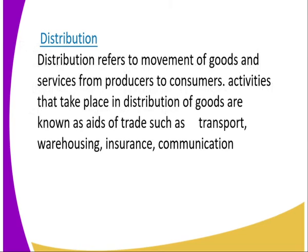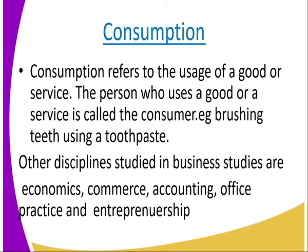Then we go to distribution. Distribution refers to the movement of goods and services from the producer to the consumer. This includes activities like storing in the warehouse, transporting, insurance, and communication along the line of distribution. Then we go to consumption. Consumption refers to the usage of goods or services. The person who uses goods and services is referred to as a consumer. For example, when brushing your teeth using toothpaste, you are consuming it.